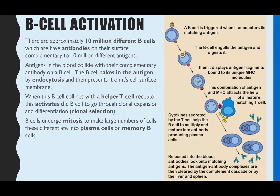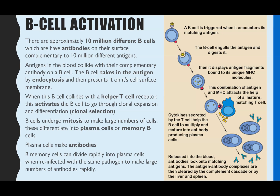The B-cell undergoes mitosis, creating large numbers of identical clones. Those B-cells then differentiate into different cell types: some become plasma cells, and some become memory B-cells. Plasma cells produce antibodies, while memory B-cells can divide rapidly into plasma cells if reinfected with the same pathogen. This allows large numbers of plasma cells — and therefore large numbers of antibodies — to be produced very rapidly.